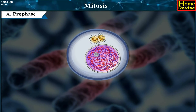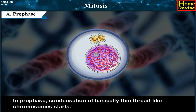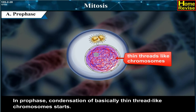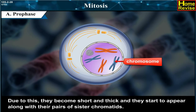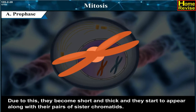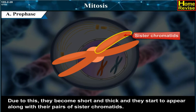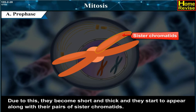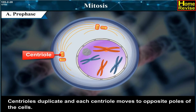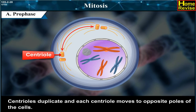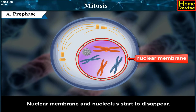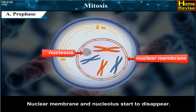In Prophase, condensation of basically thin thread-like chromosomes starts. Due to this, they become short and thick and start to appear along with their pairs of sister chromatids. Centrioles duplicate and each centriole moves to opposite poles of the cell. Nuclear membrane and nucleolus start to disappear.